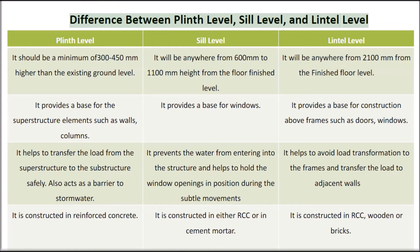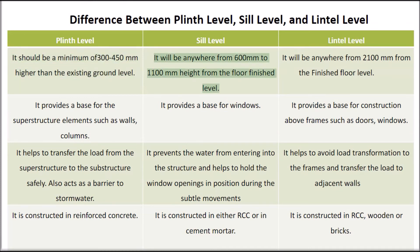Comparing the three levels: Plinth level should be a minimum of 300 to 450 mm higher than the existing ground level. Sill level will be anywhere from 600 mm to 1100 mm height from the finished floor level. Lintel level will be anywhere from 2100 mm from the finished floor level.